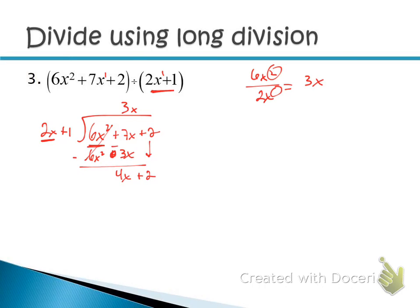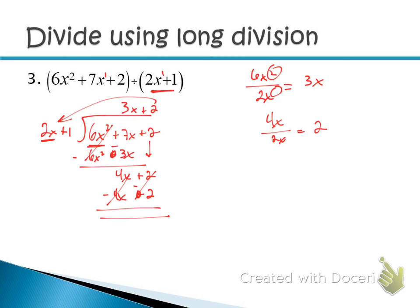Start the process over: how many times will 2x go into 4x? Divide 4x by 2x and get 2. Put +2 on top of the box. Multiply down and distribute 2 into 2x + 1 to get 4x + 2. Subtract — change all signs — and get 0 and 0. No more terms to bring down and no remainder. That means 2x + 1 and 3x + 2 are factors of 6x² + 7x + 2. If you were to factor that polynomial, that's exactly what it factors into.